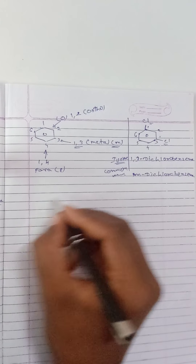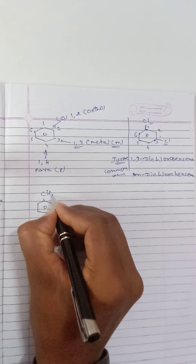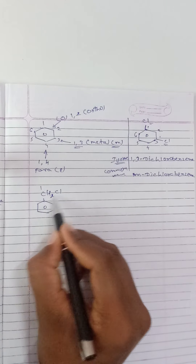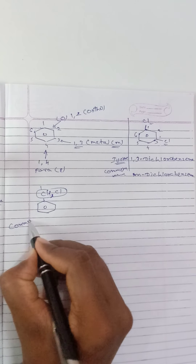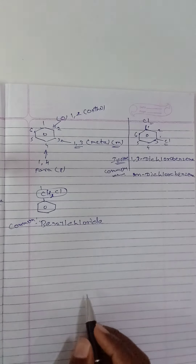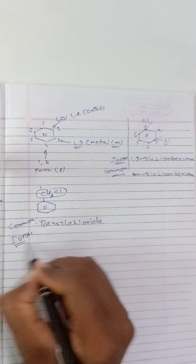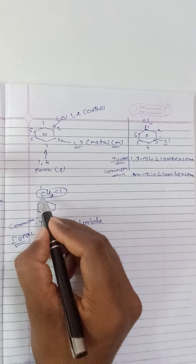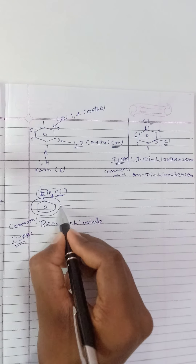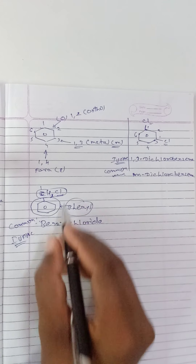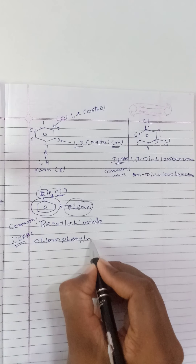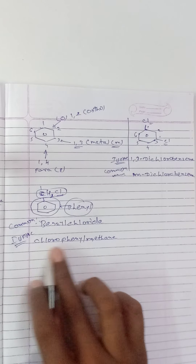Another example: C6H5-CH2Cl. Here only one carbon is present outside the ring, so the common name is benzyl chloride. For the IUPAC name — the chlorine atom is on one carbon attached to the phenyl ring — so we can write chloro(phenyl)methane or chloromethylbenzene.